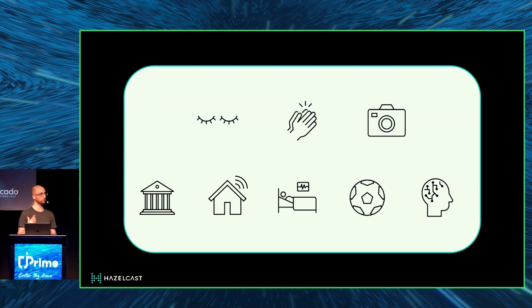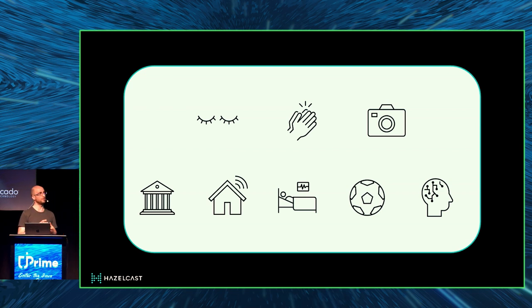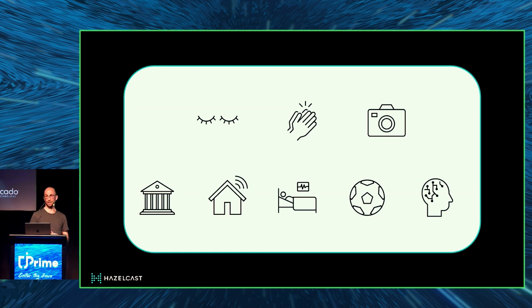Even if you don't use this type of application yourself, you still use it as an end user. On your mobile or laptop, 90% of all applications use some kind of real-time stream processing capabilities. We see it in banks — fraud detection and online payments — IoT devices, smart cars, medical devices, hospitals, sports, and machine learning.